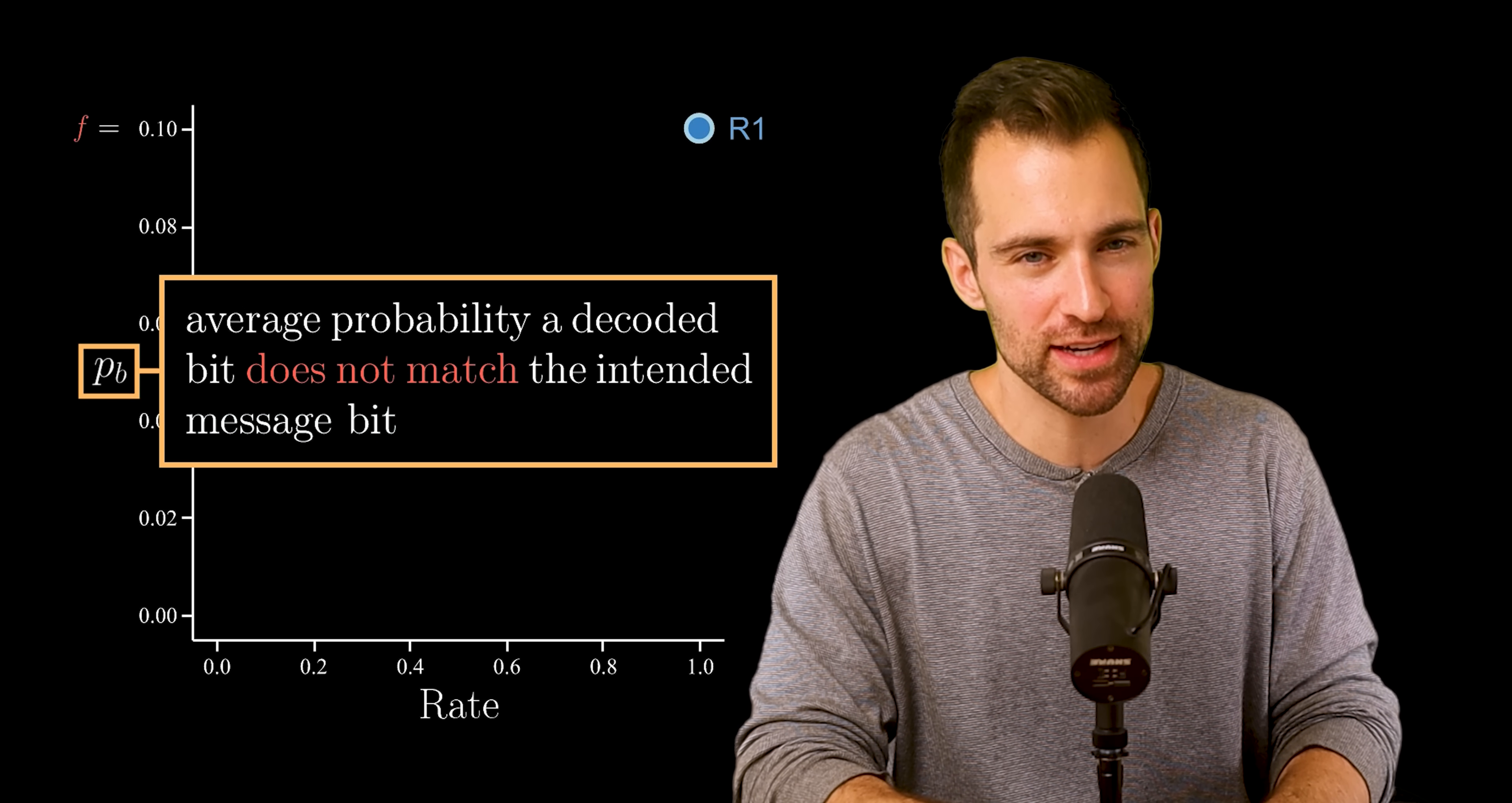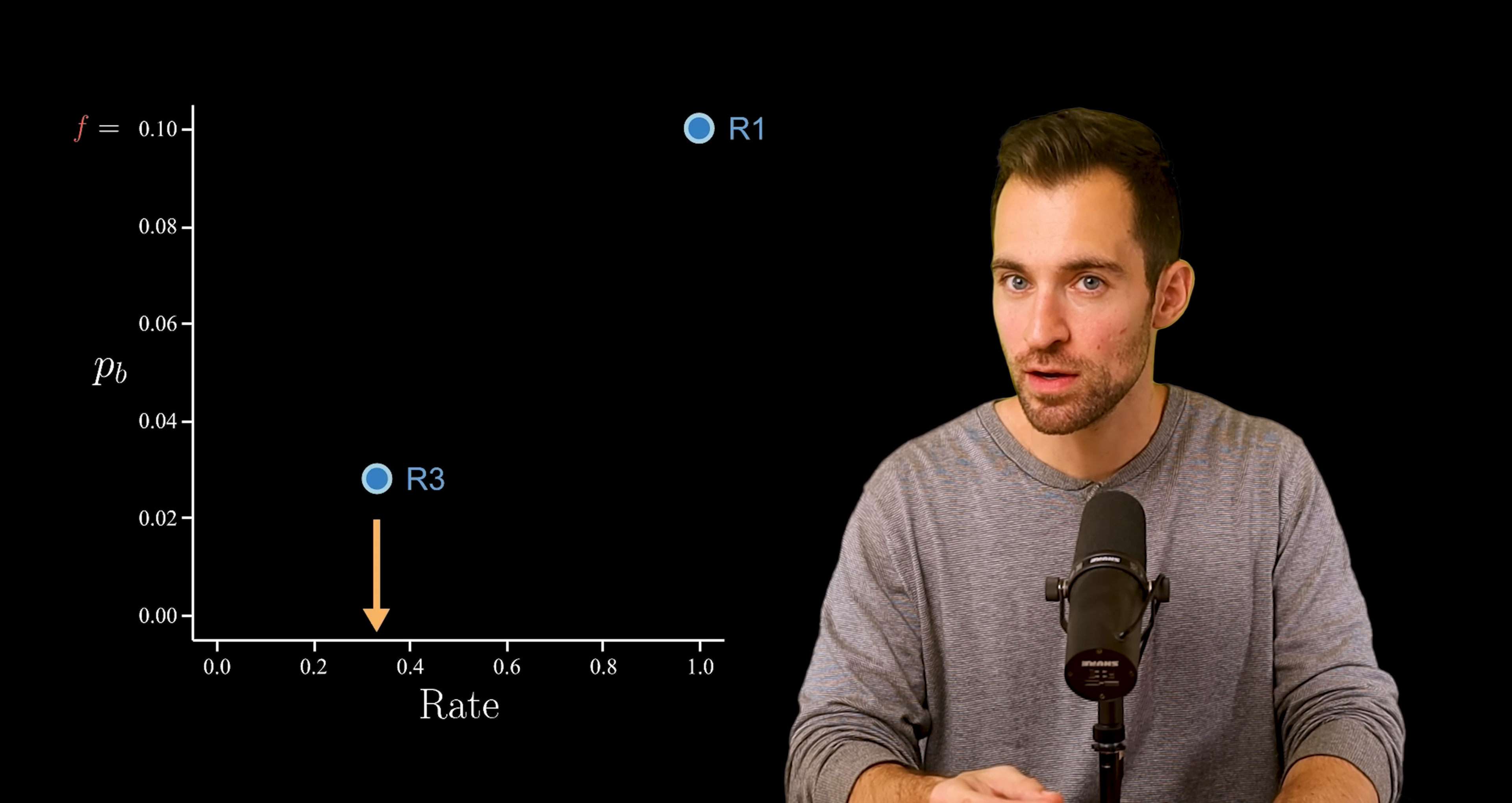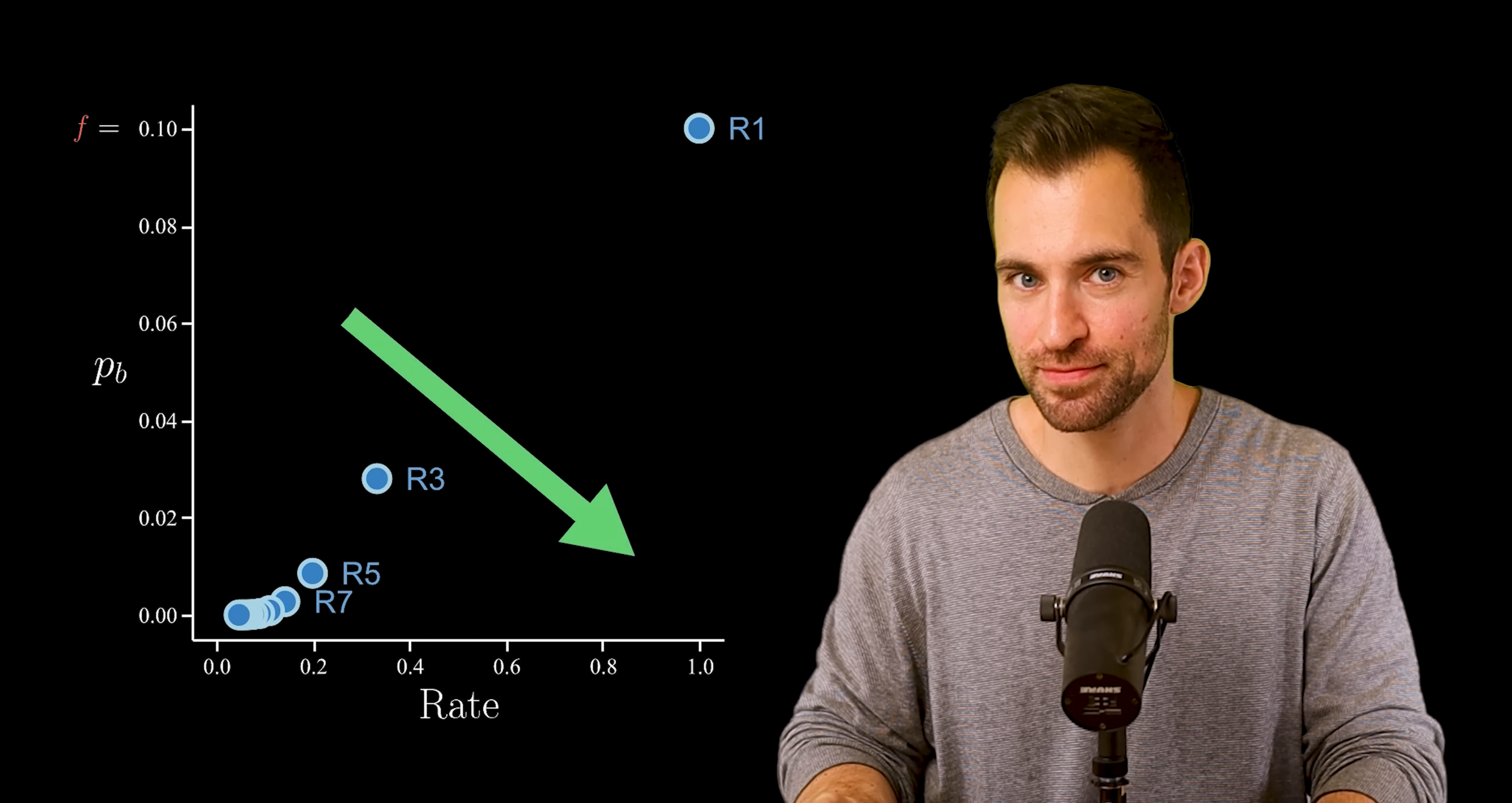The probability of bit error is the average probability a decoded bit does not match the intended message bit. This is what we were bringing down earlier. Next, the rate is the ratio of the original message length to the encoded message length, which is the relative measure of speed. For r1, no encoding, that ratio is 1. For r3, it's one third because we're encoding the message as something three times longer. So it's slower, but it enjoys a better bit error probability. In fact, this is what all the repeating strategies look like. In general, coding strategies are better in this direction.